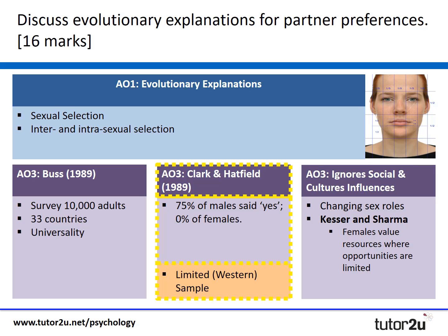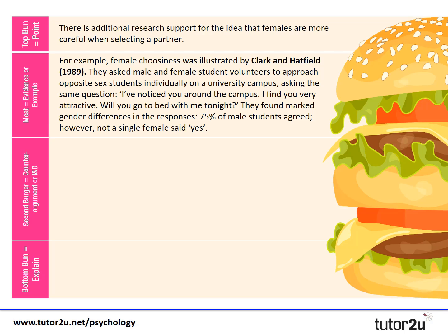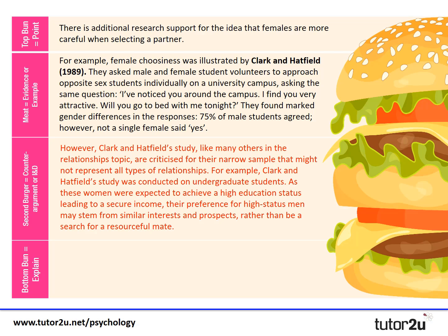For our second evaluation point, we're going to have a more in-depth paragraph where I'm actually going to criticize the sample of Clark and Hatfield's research. Female choosiness was illustrated by Clark and Hatfield in 1989 — they asked male and female student volunteers to approach opposite-sex individuals on a university campus asking 'I've noticed you around campus, I find you very attractive, will you go to bed with me tonight?' They found marked gender differences: 75% of male students agreed, however not a single female said yes.